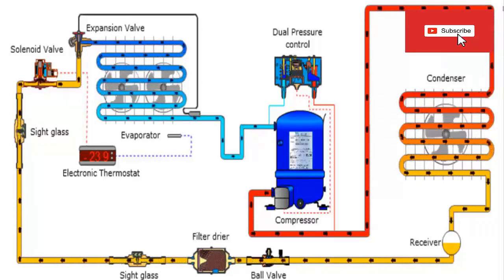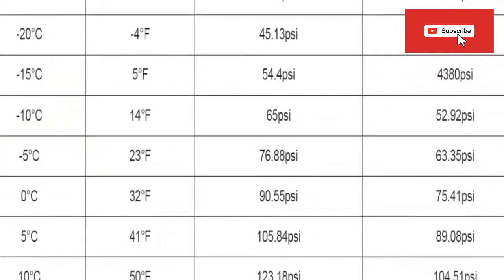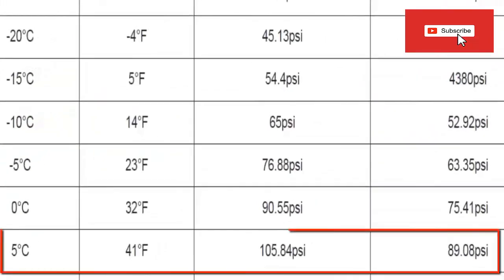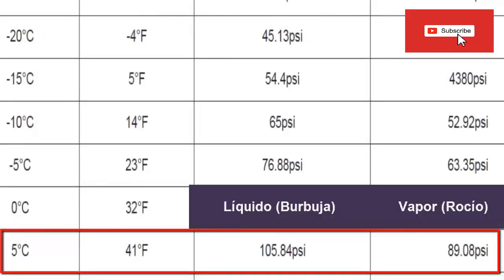For example, for an evaporator temperature of 5 degrees Celsius, about 41 degrees Fahrenheit, according to the table, there are two pressure values: liquid or bubble pressure equal to 105.84 psi, and vapor or dew pressure of 89.8 psi.